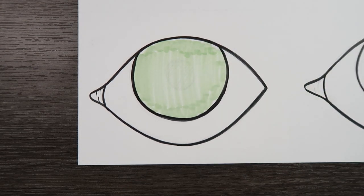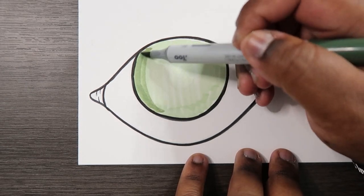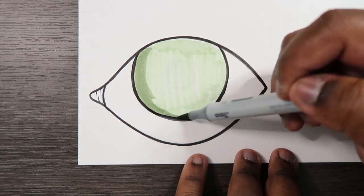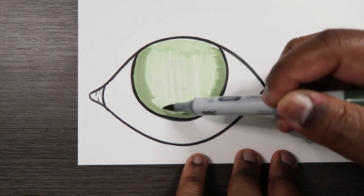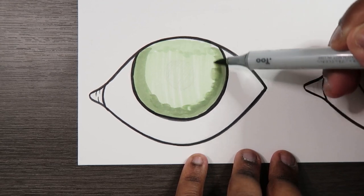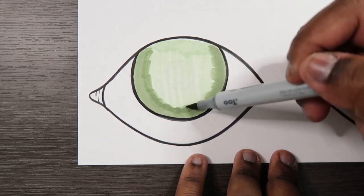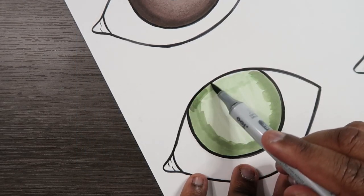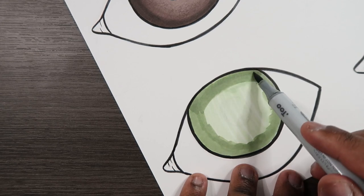All right now let's use our G85 and apply it around the contours of the iris. And apply a large area of it so that way we got room to blend the darker colors.